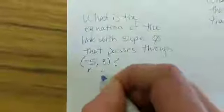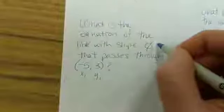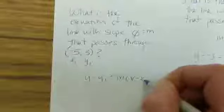So I've identified this as my x1, y1. And this is going to be my m value. Now that I have those, I can put it into the formula. y minus y1 equals m times x minus x1.